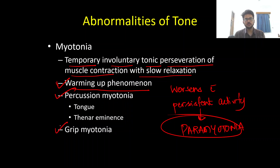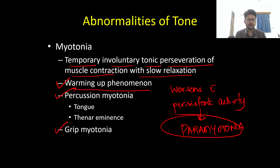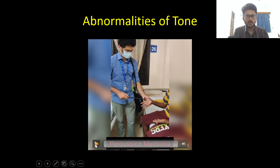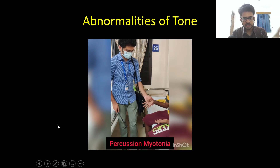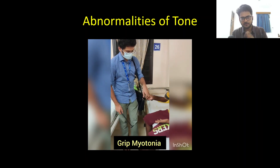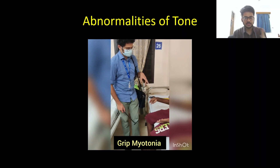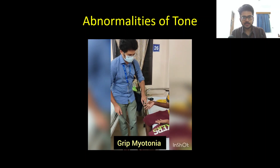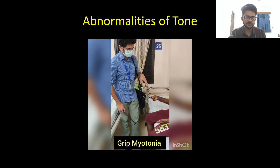There are two important types of myotonia to appreciate clinically. Percussion myotonia: we tap the muscle with a tendon hammer and note a contraction with delayed relaxation. Grip myotonia: we ask the patient to grip our fingers or an object and then release it — they will not be able to release it freely due to delayed relaxation. In this video of a patient with myotonic dystrophy type 1, you can see percussion myotonia and grip myotonia demonstrated — he is not able to release his grip easily because of the delayed relaxation.